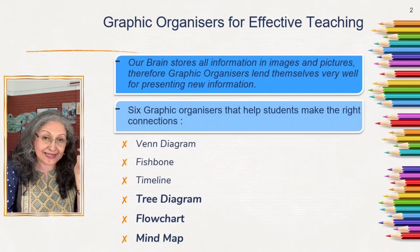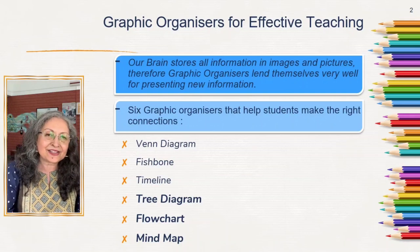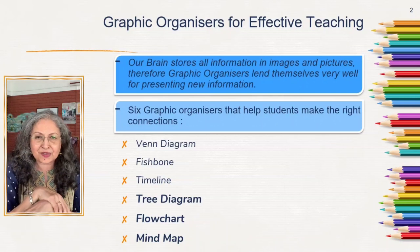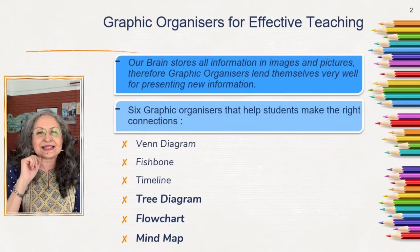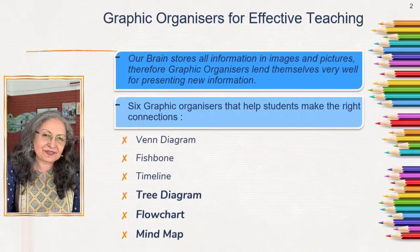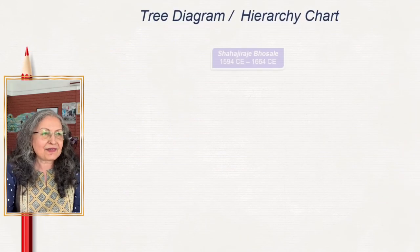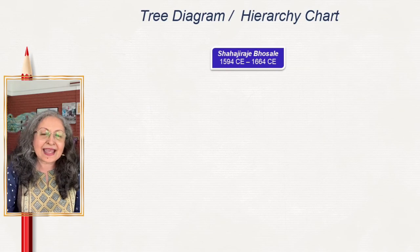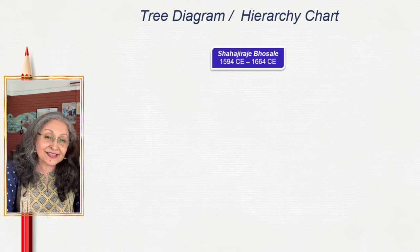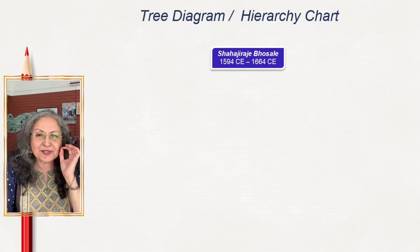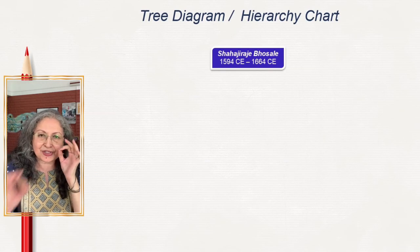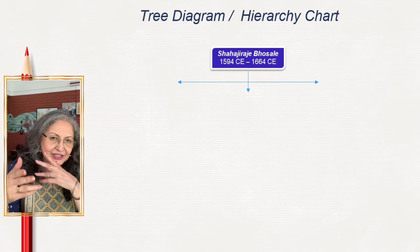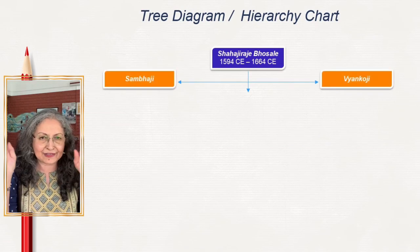In today's episode we are taking three we haven't touched upon so far: the tree diagram, also known as the hierarchy chart; the classification chart; the flow chart, also known as the process chart; and the mind map. Let's begin with the first example — a tree chart. I've taken the dynasty of Bhosle because I'm sitting here in Maharashtra, and we're talking about Shahaji Raja Bhosle. It's a good idea to put pictures and dates and show the family tree.